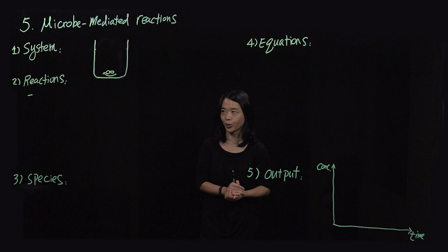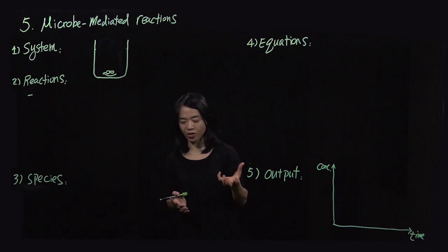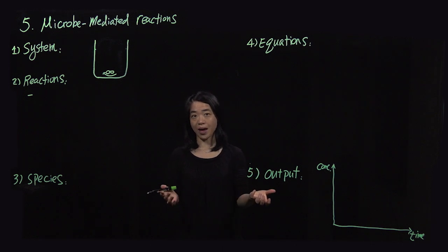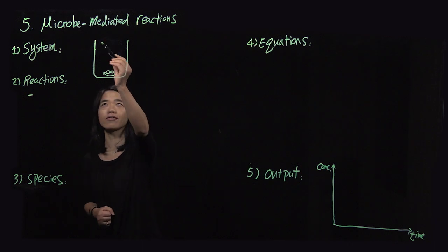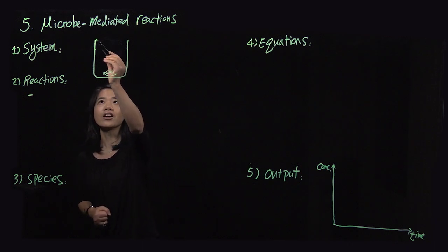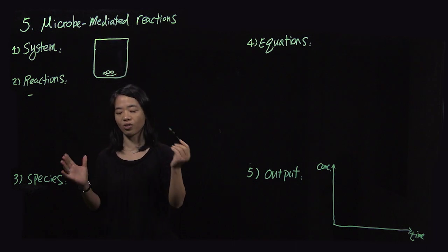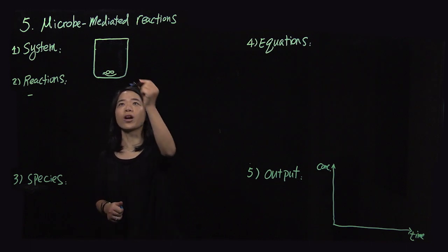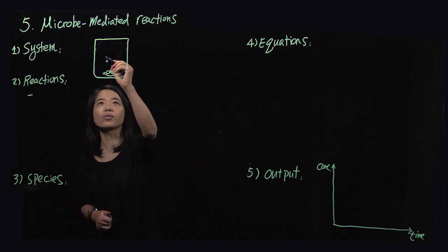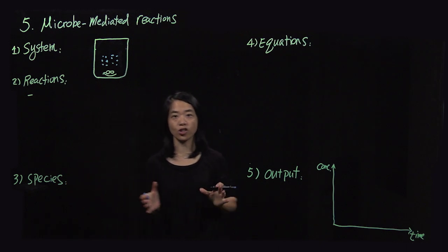Here's an example: I grab some soil from the backyard and put it in a cup with some water. So we have soil — let's say these are the grains — and the water originally has some oxygen dissolved in it.